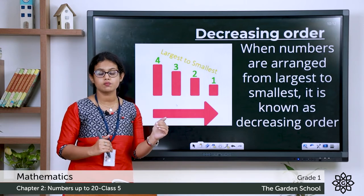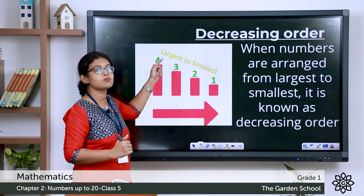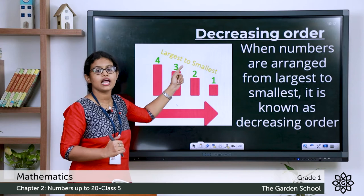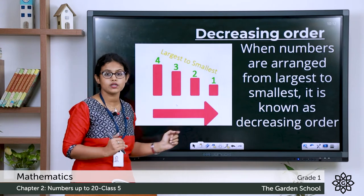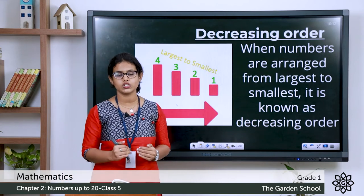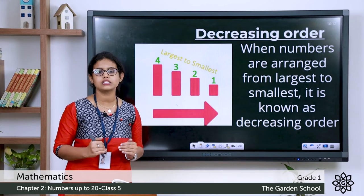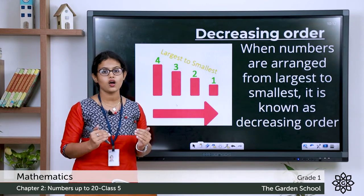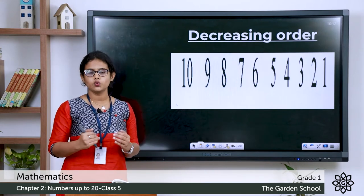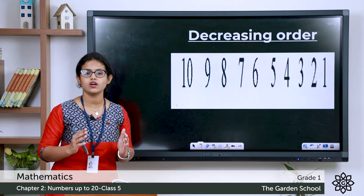From the fourth block to the first block you came down in decreasing order — from the largest block to the smallest block. Number 3 is smaller than 4, number 2 is smaller than 3, and number 1 is smaller than 2. So this is decreasing order: when you arrange numbers from largest to smallest, we call it decreasing order or descending order. When we do backward counting, we always do it in decreasing order.